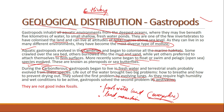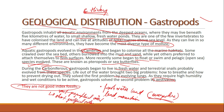Gastropods evolved in the Cambrian age. An important point to remember: these are not good index fossils. Index fossils must have a vast geographical extent and a short geological extent — they should be distributed widely but lived for only a short period and be extinct by now. Gastropods do have wide geographical distribution, but they are still present today, so they do not have a short geological extent, and hence they are not index fossils.